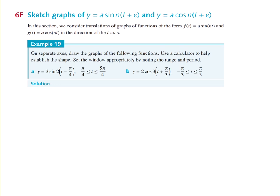Example 19. On a separate axis, draw graphs of the following functions. Use a calculator to help establish the shape. Well, we're not going to bother with that part. So let's get straight into it. Y equals 3 sine 2x minus π/4, and make sure you are aware of the domain. So it's only between π/4 and 5π/4.